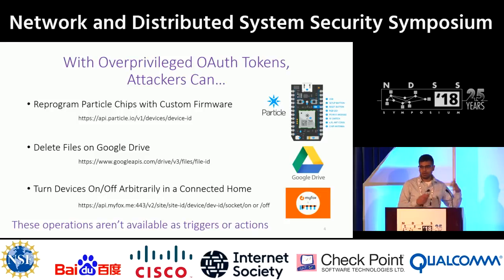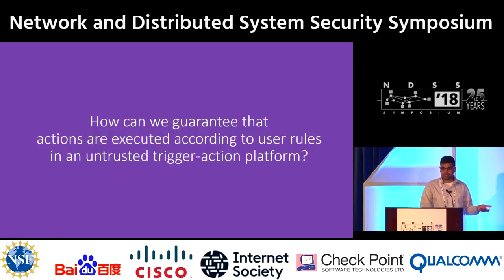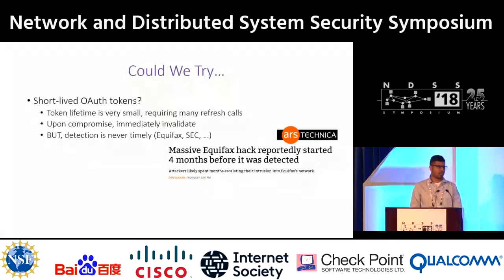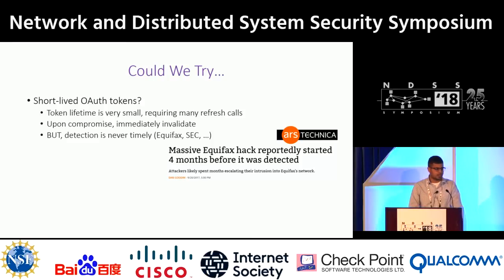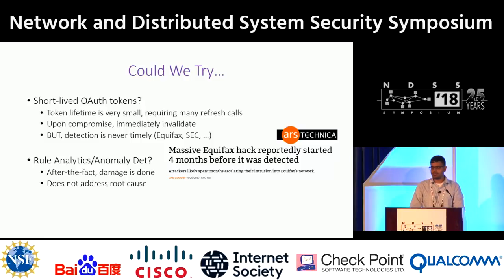The upshot is that we have to rethink our threat model. A more appropriate threat model for these trigger action platforms is that they are untrusted. The core security guarantee becomes: how can we ensure that actions are executed as per the user's intentions and their rules? We could try short-lived OAuth tokens, but that requires timely detection and recent experience has shown otherwise. We could try rule analytics or anomaly detection — this is good defense in depth, but it does not address the root cause of the problem.